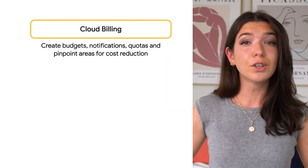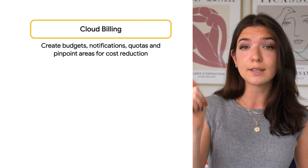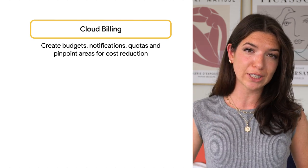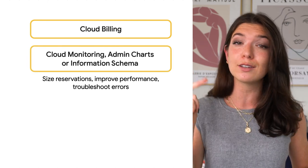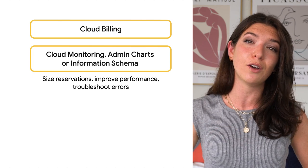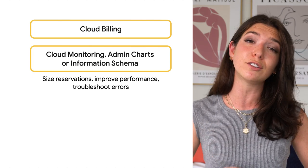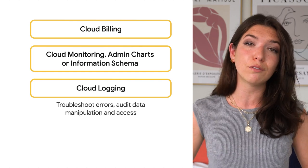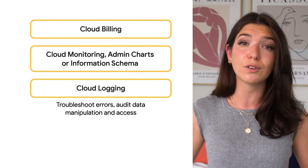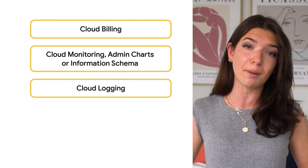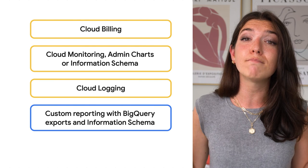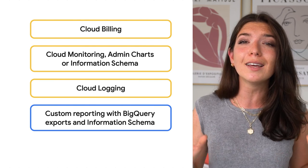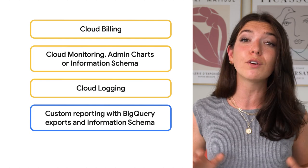As you can see, monitoring is essential to making informed decisions on optimizing your BigQuery data warehouse. As a quick review: you can use billing data to create budgets, custom quotas, and dig into areas where you can reduce costs. To size reservations, improve performance, and troubleshoot errors, you can use Cloud Monitoring or the information schema — or, if you're a reservation customer, the new BigQuery admin resource charts. Finally, you can use Cloud Logging to review granular log data, which is also useful for troubleshooting and monitoring data access policies. The great part of monitoring in BigQuery is that you have the flexibility to export any of these data sources back into your data warehouse for custom reporting.